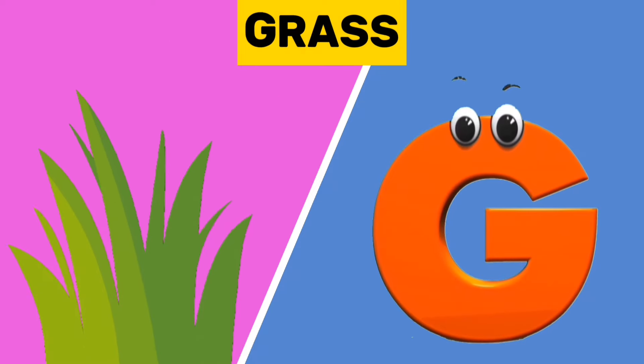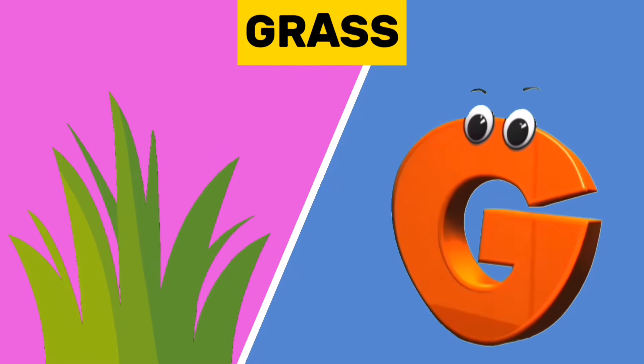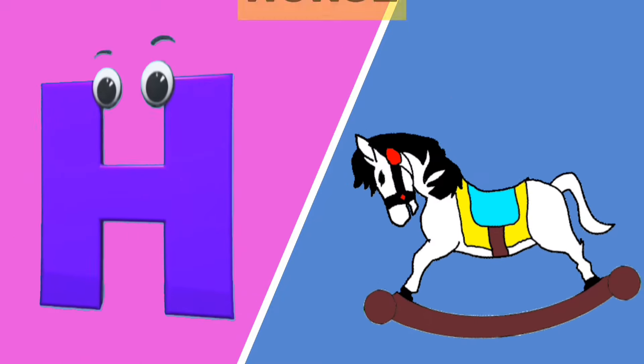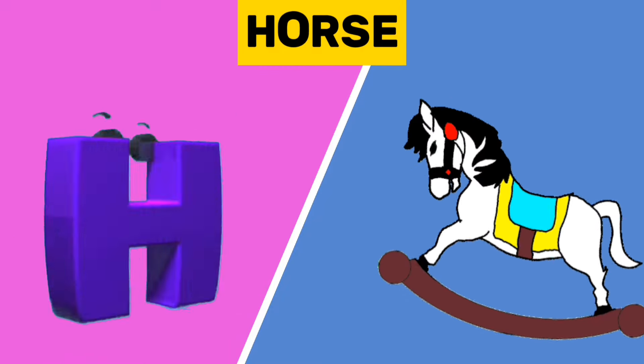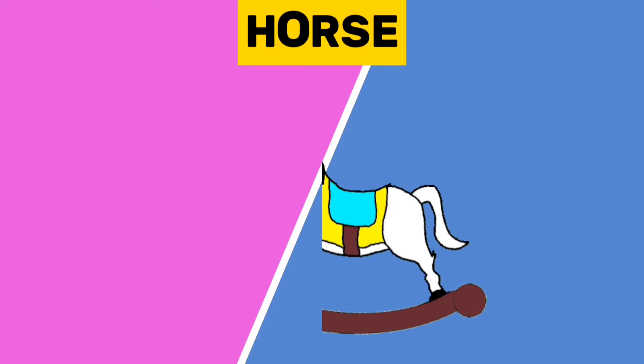G is for grass. G, g. Grass. H is for horse. H, h. Horse.